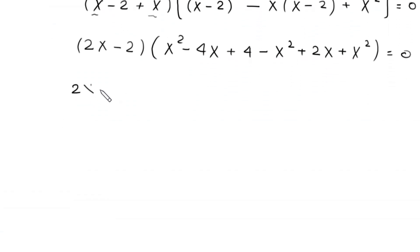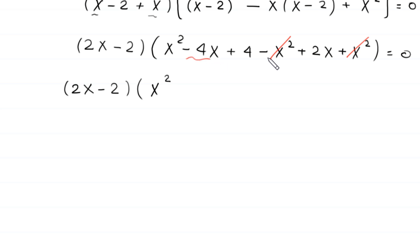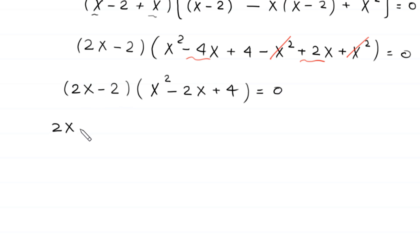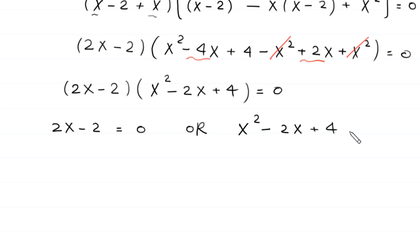The negative x squared will be cancelled with the positive x squared and we are left with x squared. This negative 4x plus 2x becomes negative 2x plus 4, is equal to 0. From here, either 2 times x minus 2 is equal to 0, or x squared minus 2x plus 4 is equal to 0.